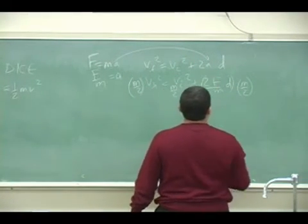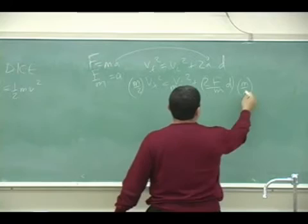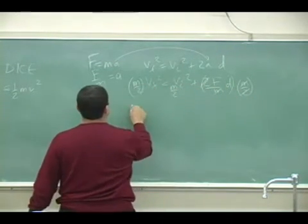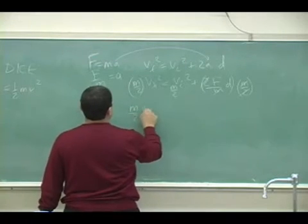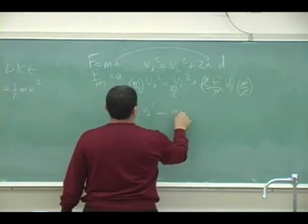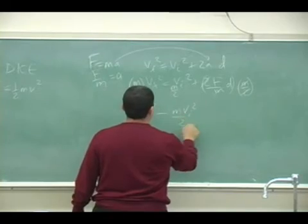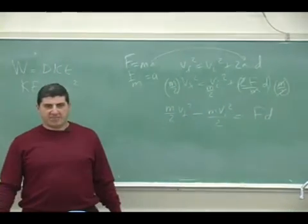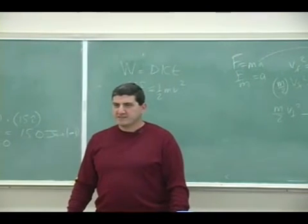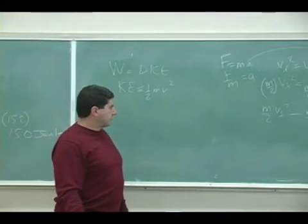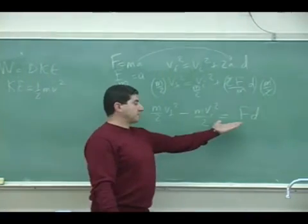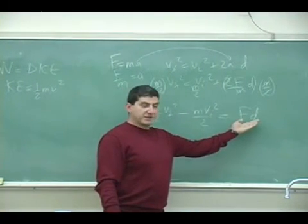Okay, so what's gonna happen? 2 and m cancel, and then bring this over to this side. So now what is this? This is work, F times d.